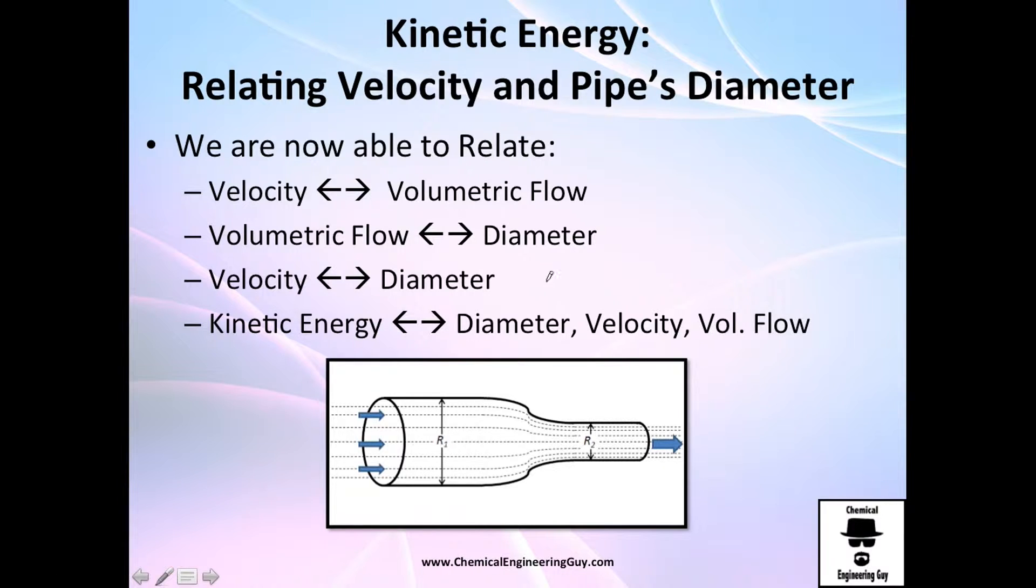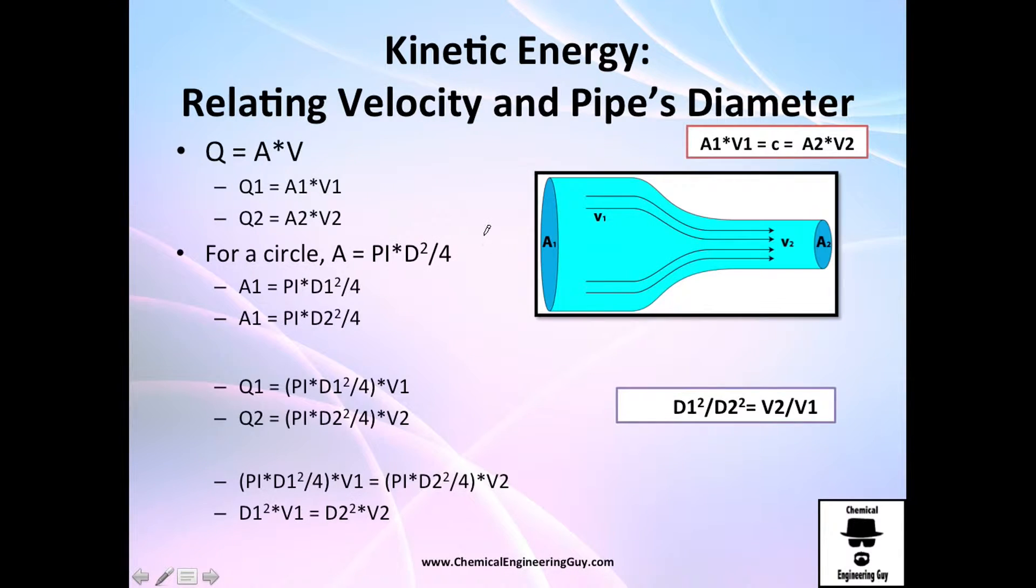So good. Why do we want this? Essentially, for the mechanical energy equation, recall that we have velocities, guys. So we need that. So with one velocity, we can relate a volumetric flow rate. With a volumetric flow rate, we can relate with a diameter. With a velocity, we can relate a diameter with these equations. This equation right here.